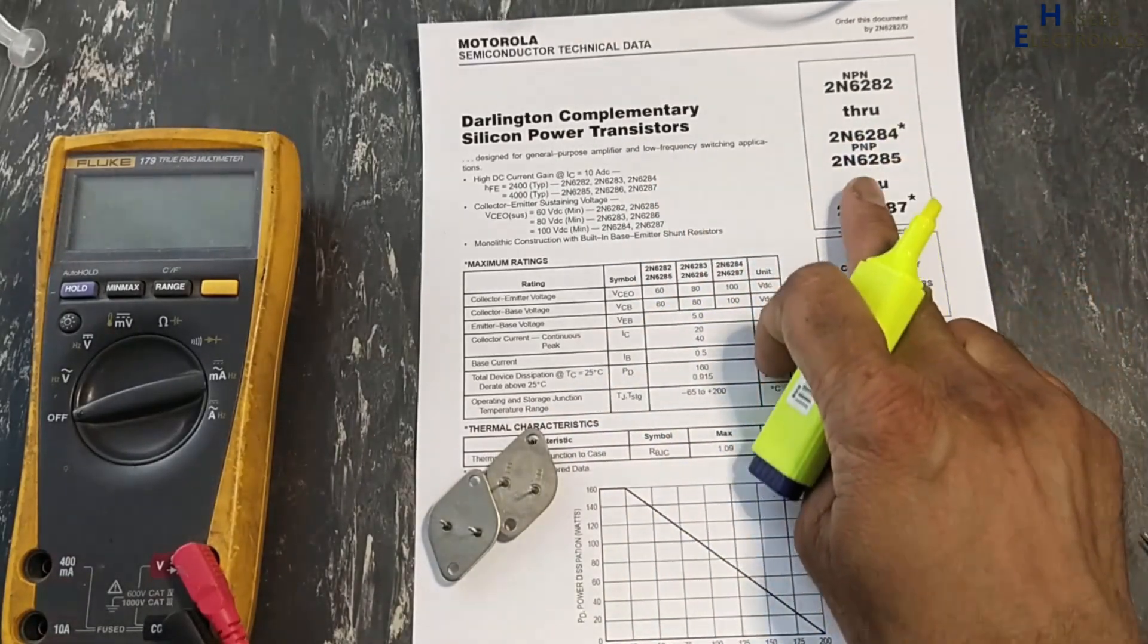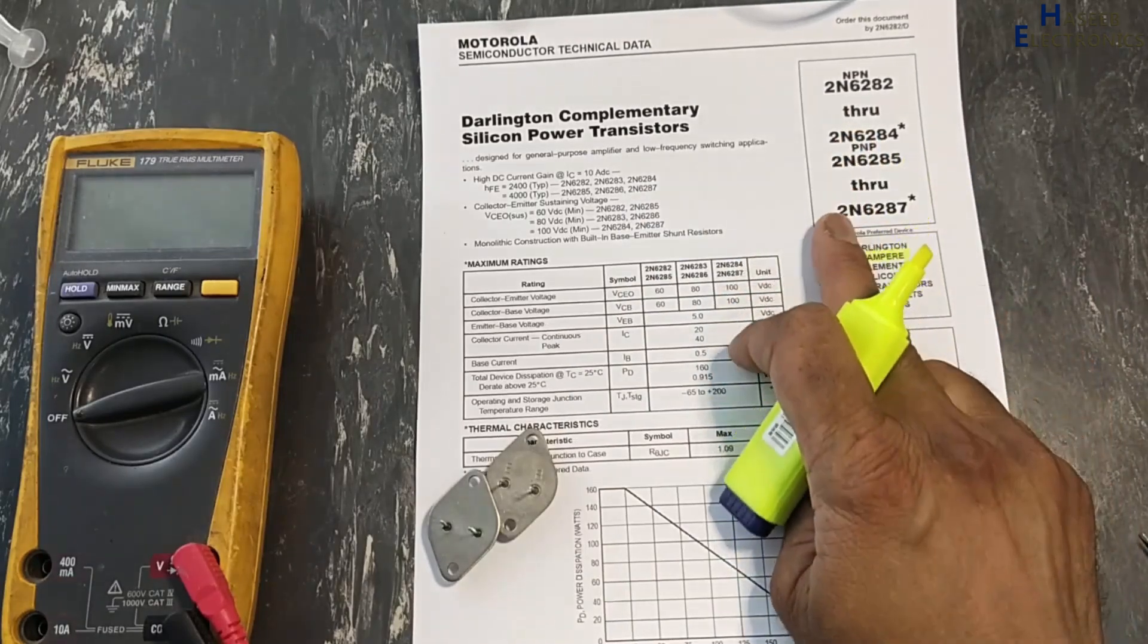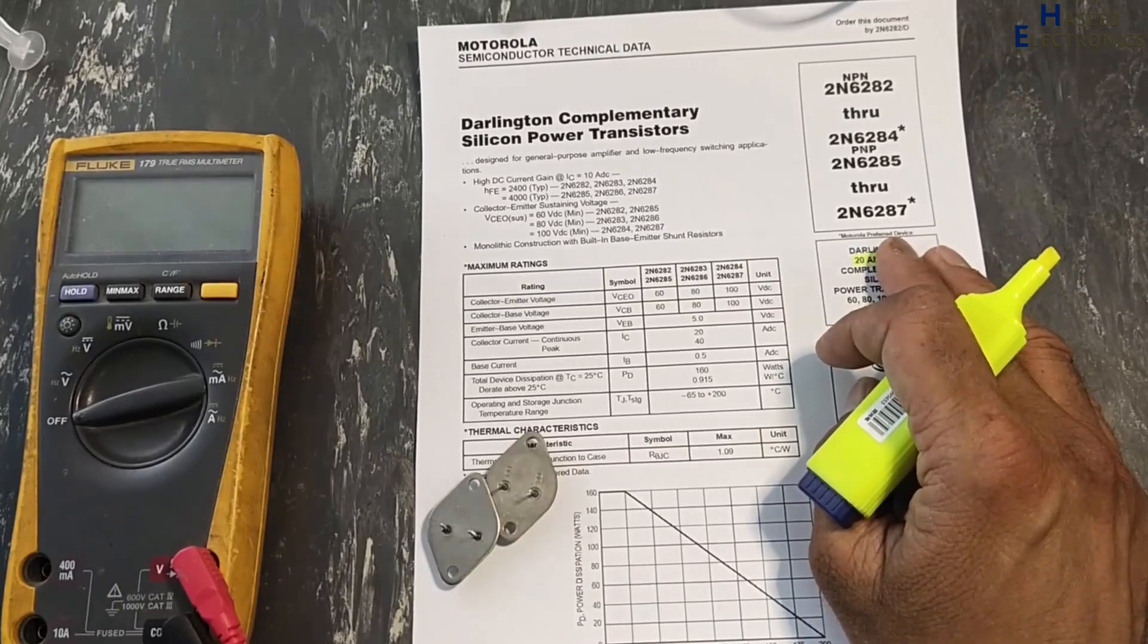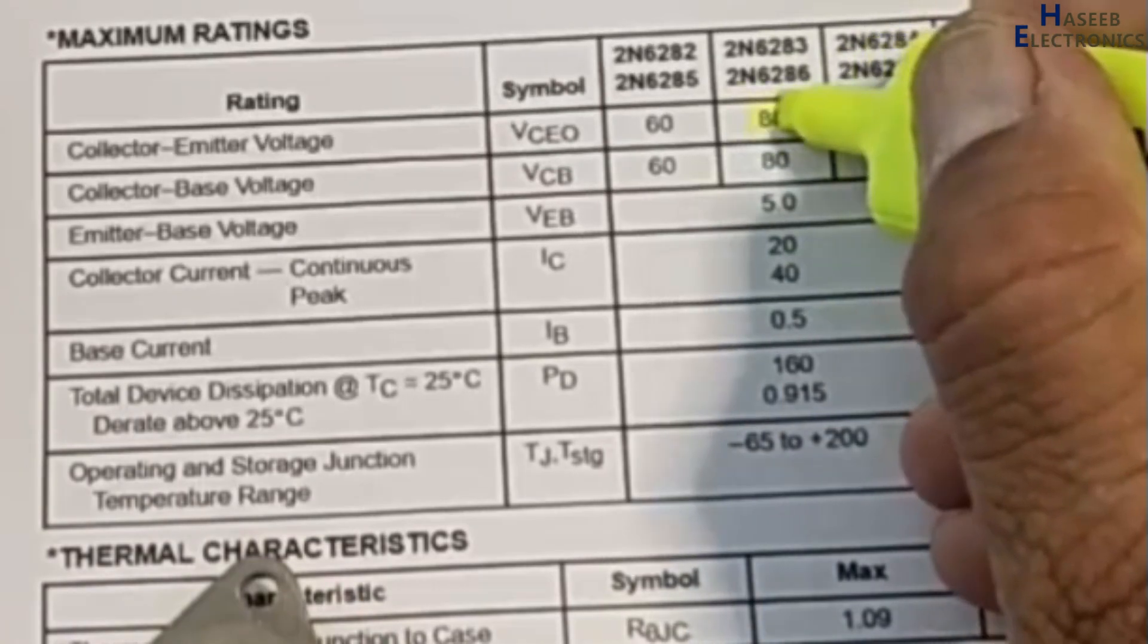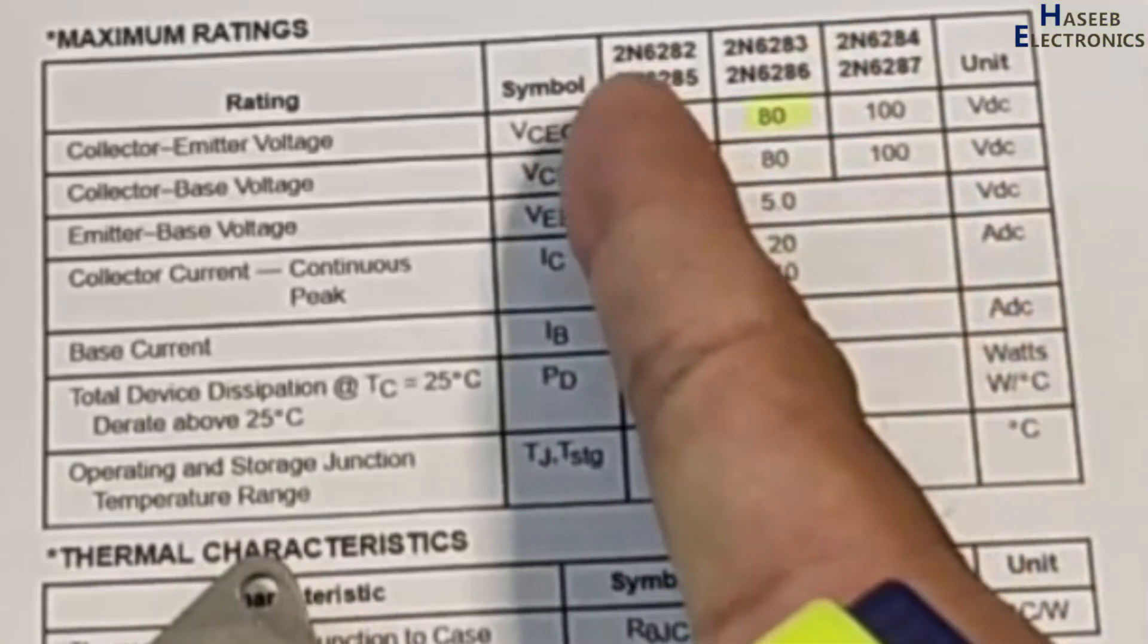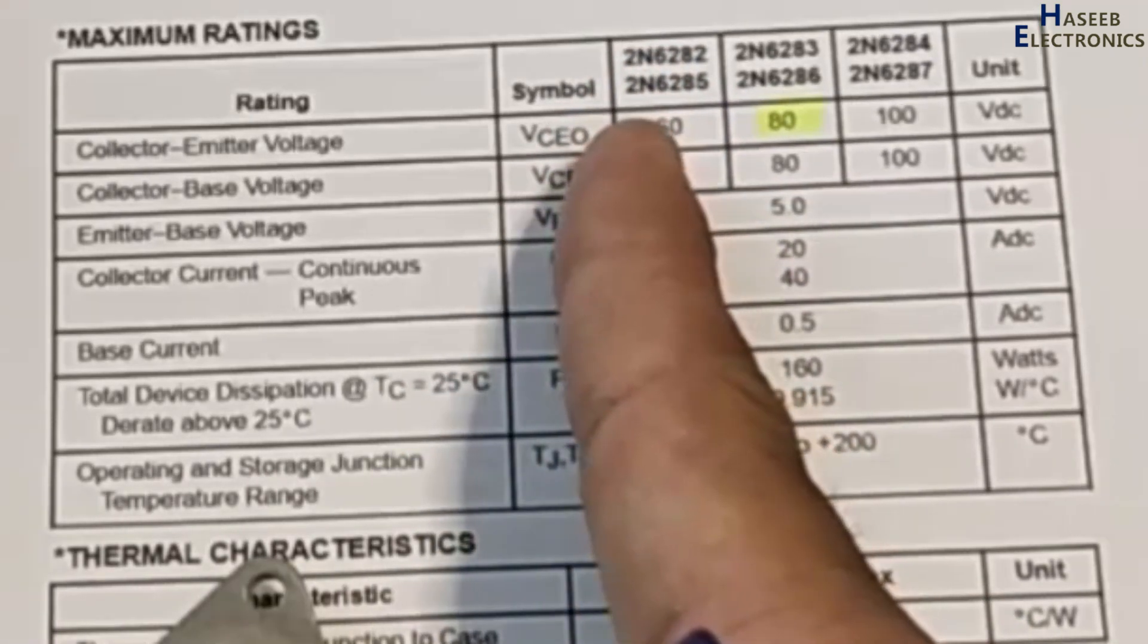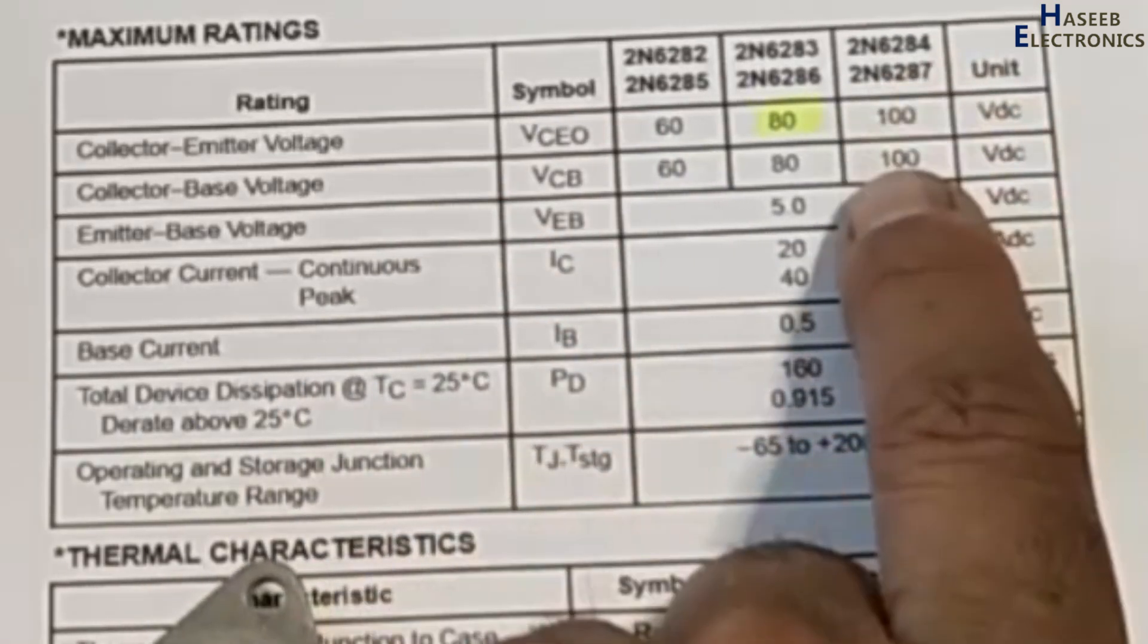2N6282 to 6284 these are NPN, and 6285 to 6287 are PNP. So it is basically pair setting. 6283 and 6286 are 80 volts. This is one pair. 6282 will make pair with 6285, it is 60 volt.